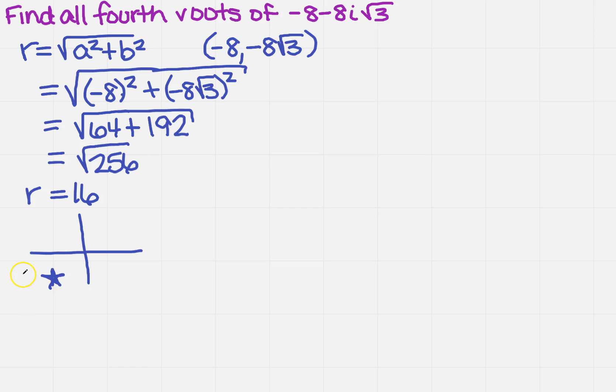If it's in that quadrant, I need to figure out what is theta. Well, I know that I have a now, and I also have r, so I can find the cosine of theta, which is going to be a over r. And what is a? Well, we just said that a is minus 8. We just found r, which is 16.